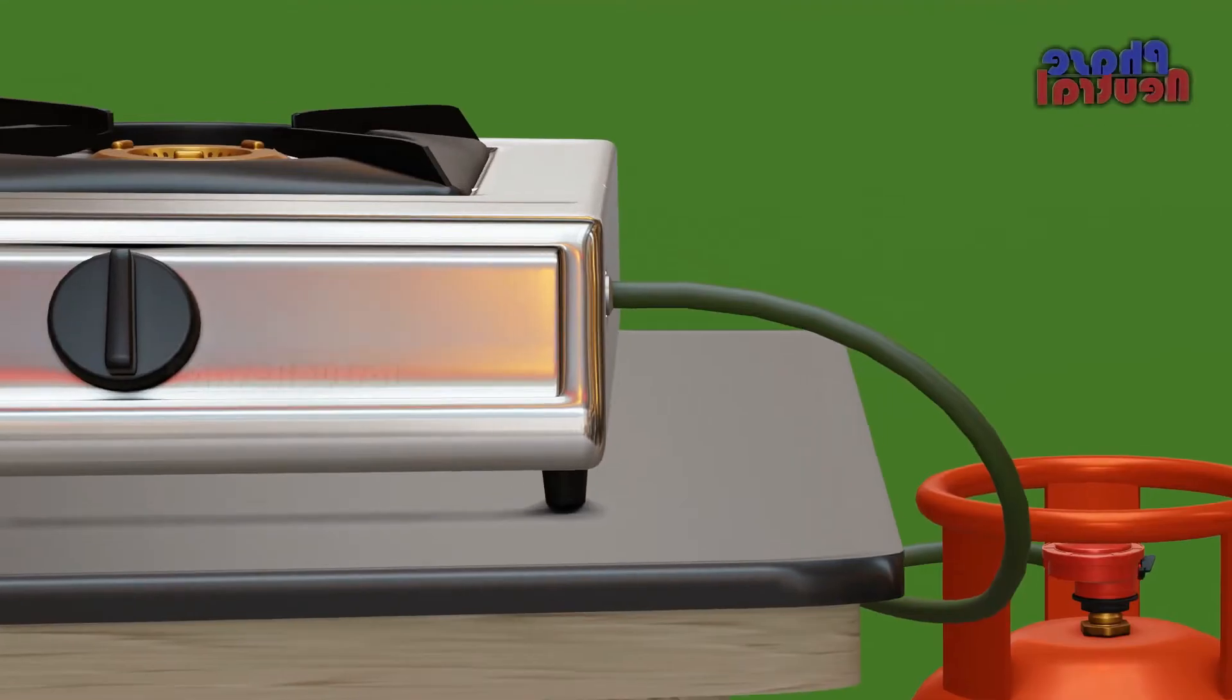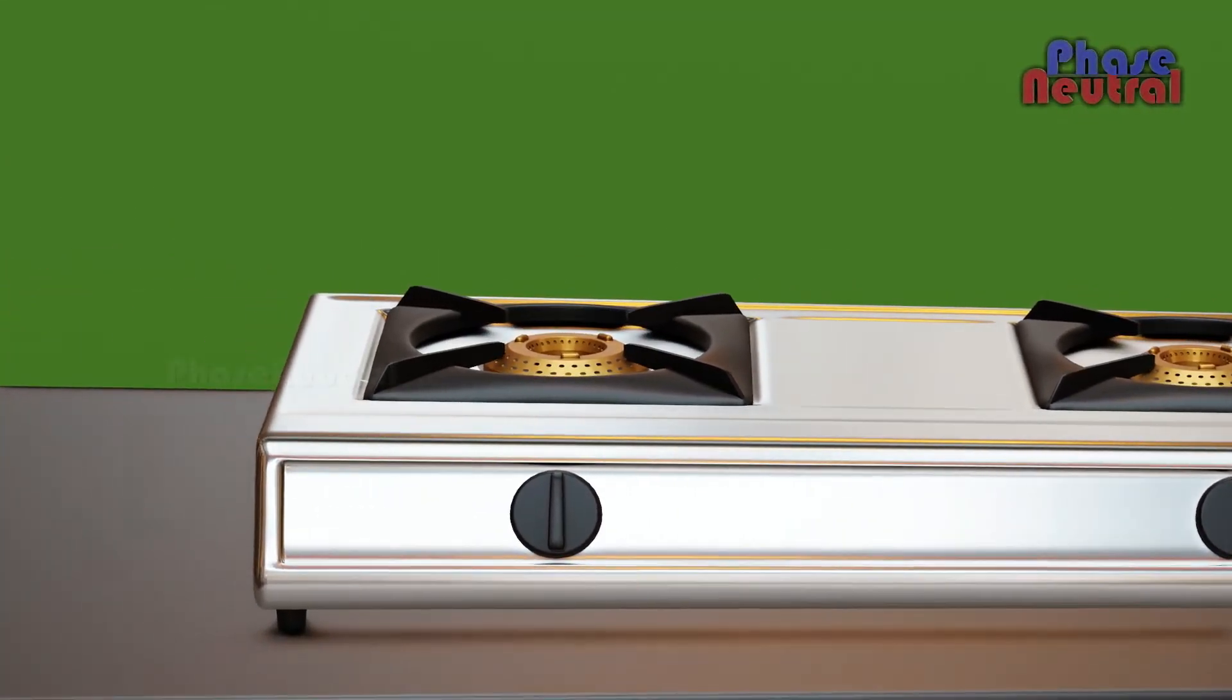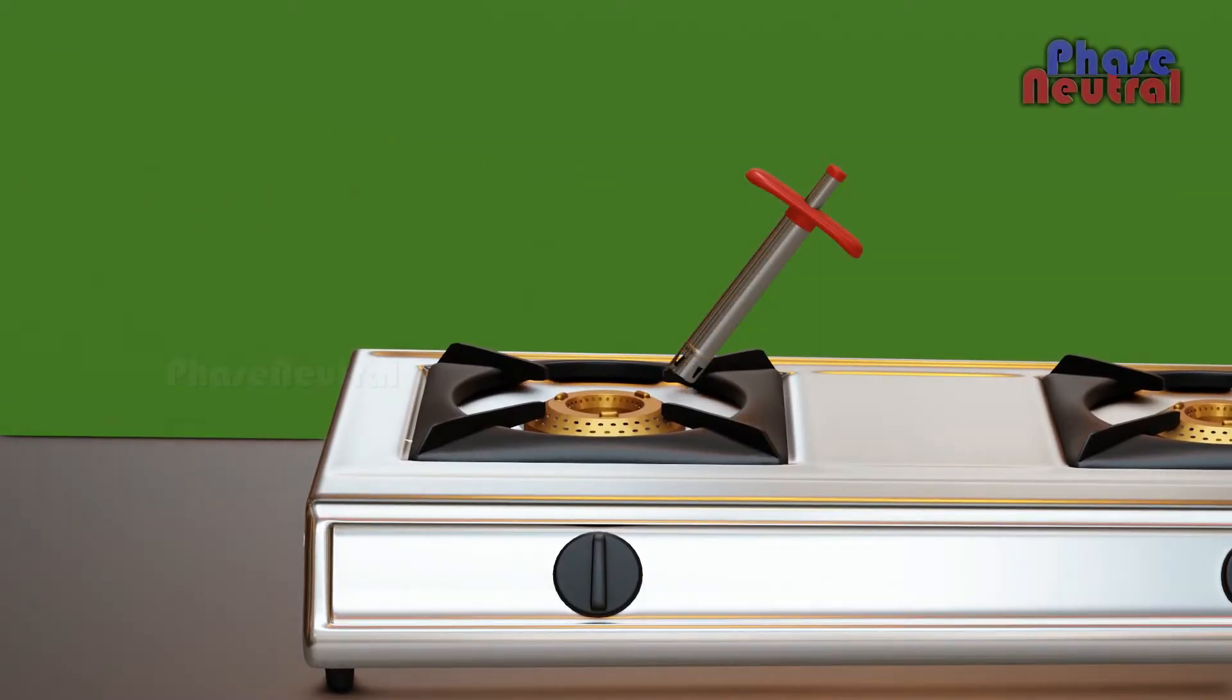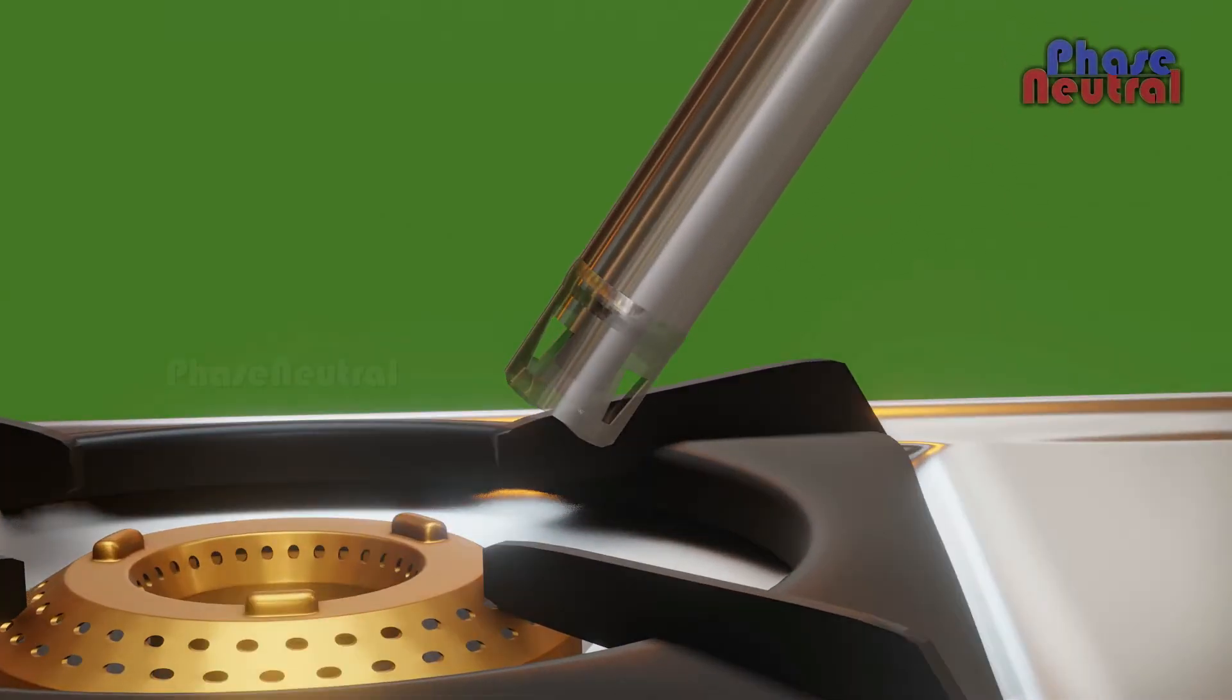Gas stoves are mainly two types: manual ignition gas stove and auto ignition gas stove. Manual ignition gas stoves need a gas lighter to ignite the burner manually. The gas lighter produces a small electric spark to ignite the gas stove with the help of the piezoelectric effect.